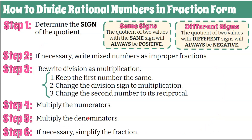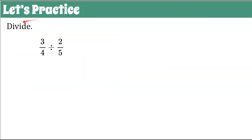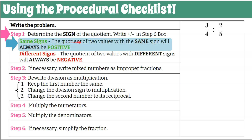Let's go practice these six steps using a graphic organizer as our procedural checklist. We're going to divide three-fourths by two-fifths. We write our problem, then step one: determine the sign of the quotient and record it in the step six box. Both numbers are positive — same signs — so the quotient will be positive. We write that positive sign in our step six box.